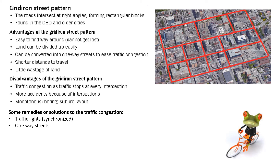The last one is the most common one found in the center of cities, in CBDs. In our own town in Polokwane, our CBD definitely also looks like this. The roads intersect at right angles, making rectangular blocks. The advantages are it's really easy to find your way around, land is easily divided up, there's very little wastage of space, and there's a shorter distance of travel.